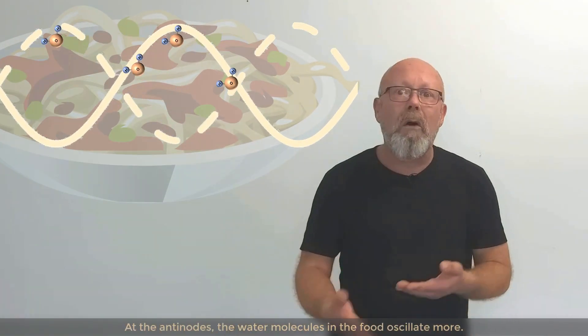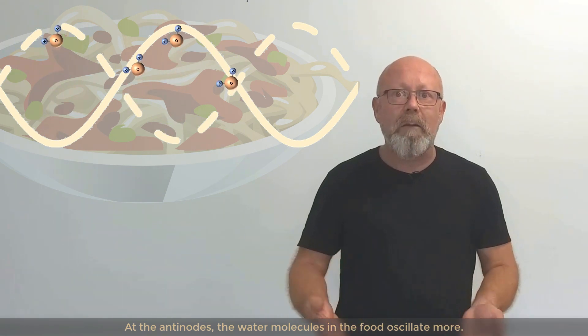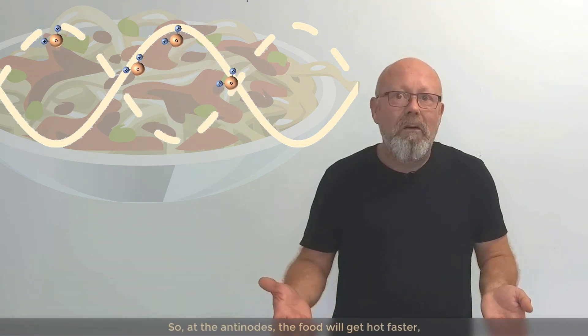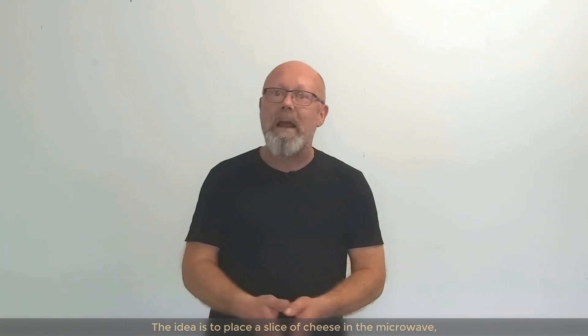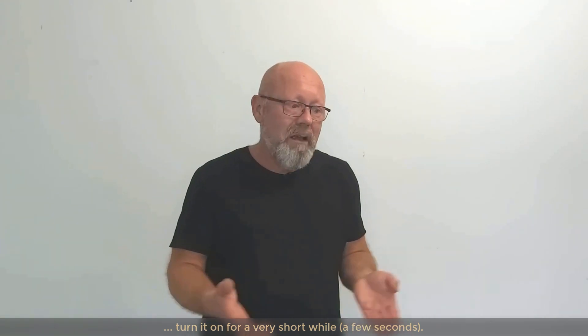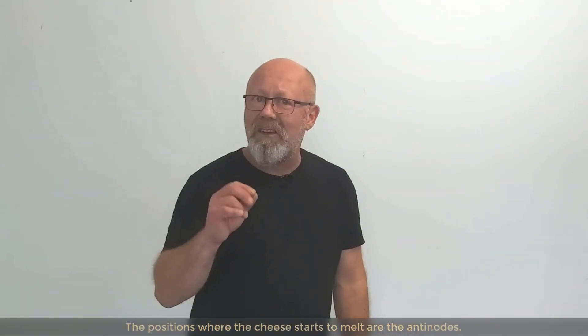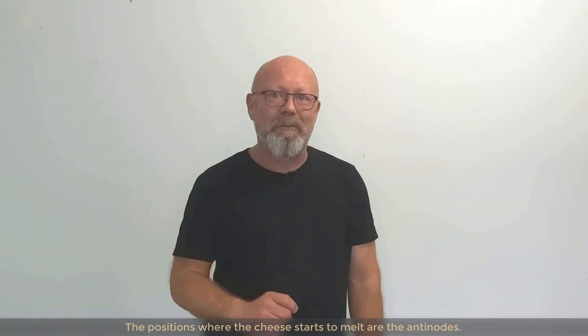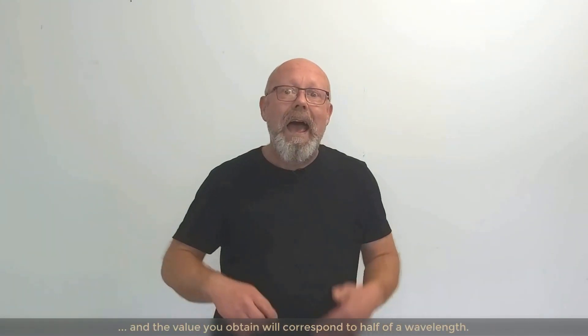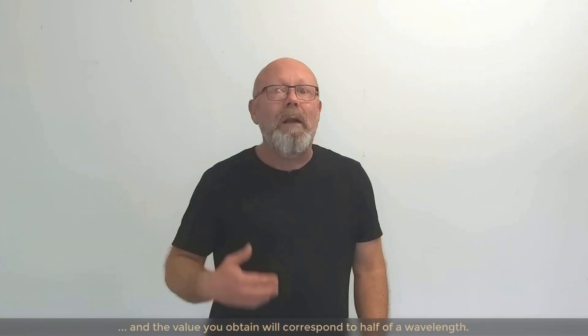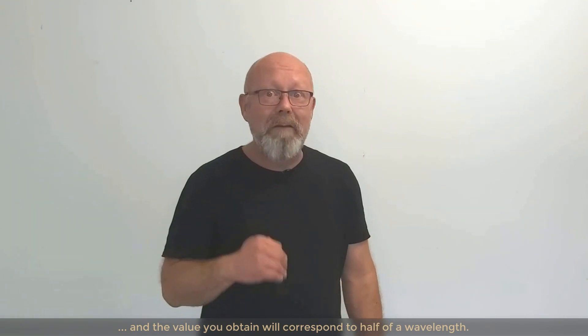At the antinodes, the water molecules in the food will oscillate more. So, at the antinodes, the food will get hot faster. So, the idea is to place a slice of cheese in the microwave, turn it on for a very short while, a few seconds for example. The positions where the cheese starts to melt will be the antinodes. You just need to measure the distance between the melted spots. And the value you obtain will give you a value corresponding to half of the wavelength.